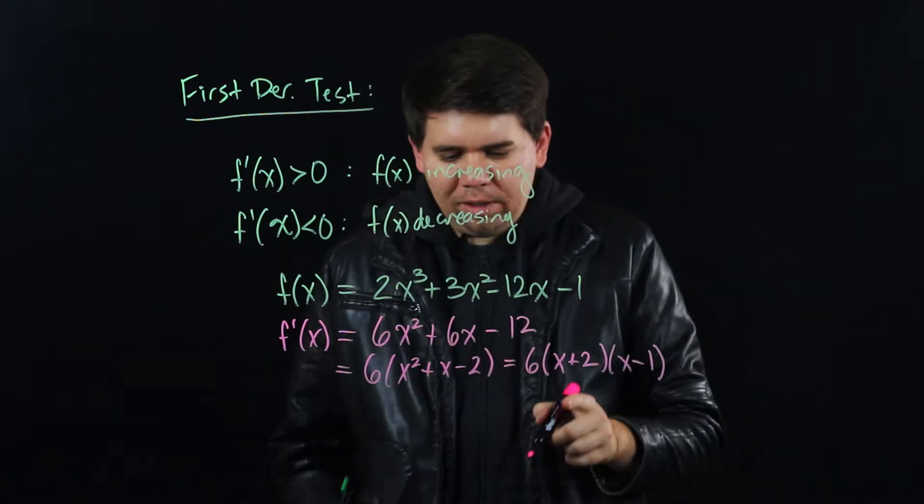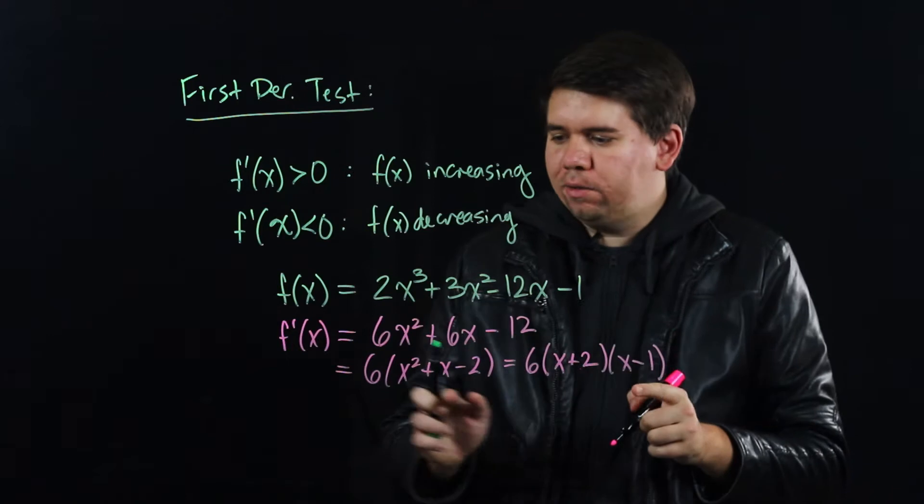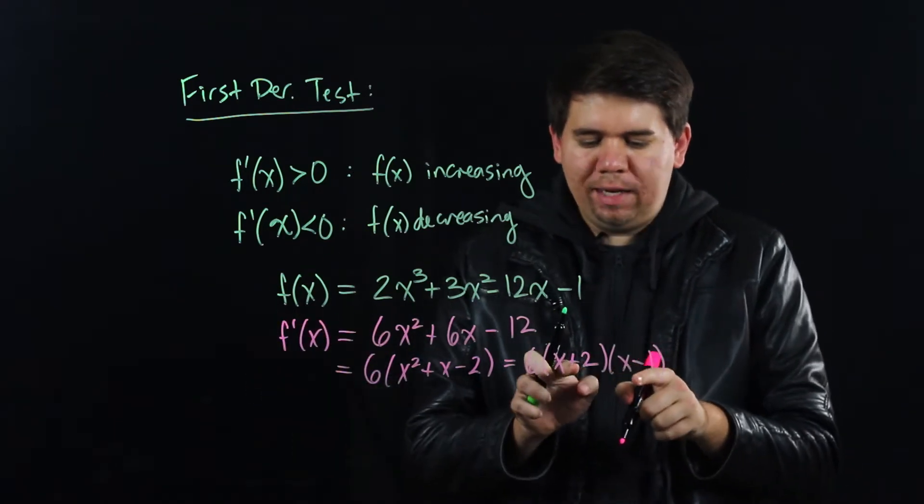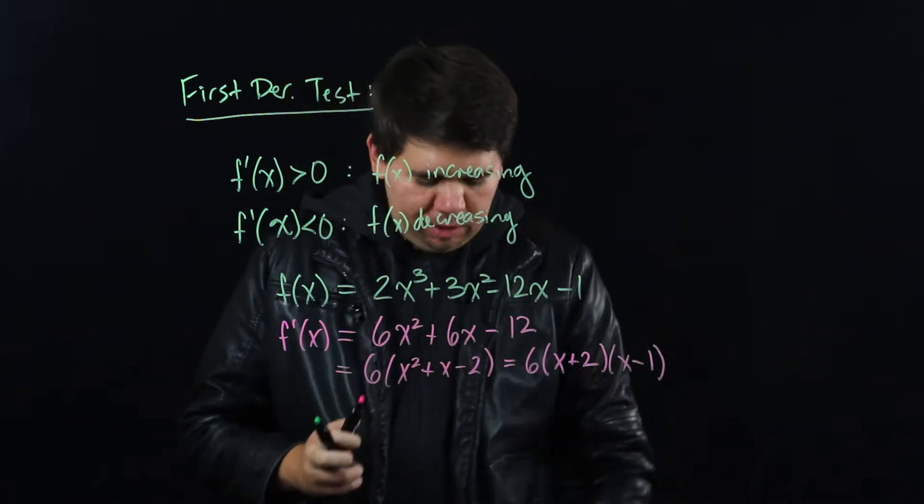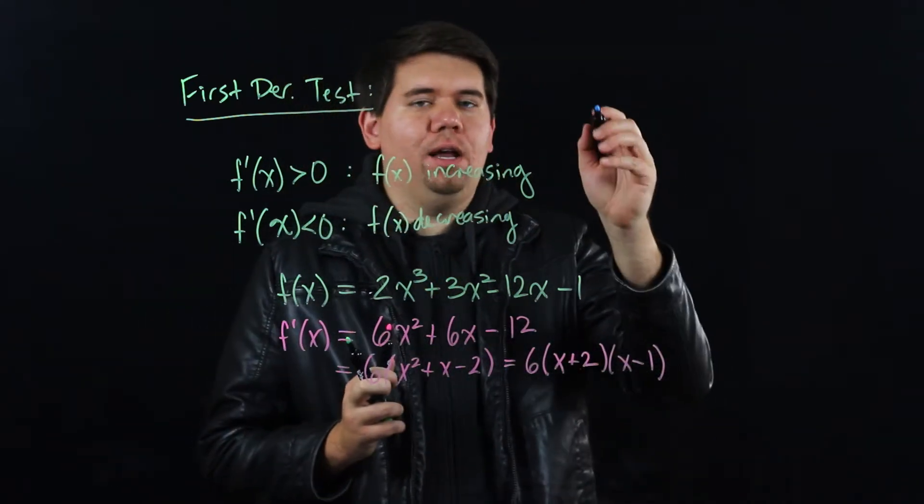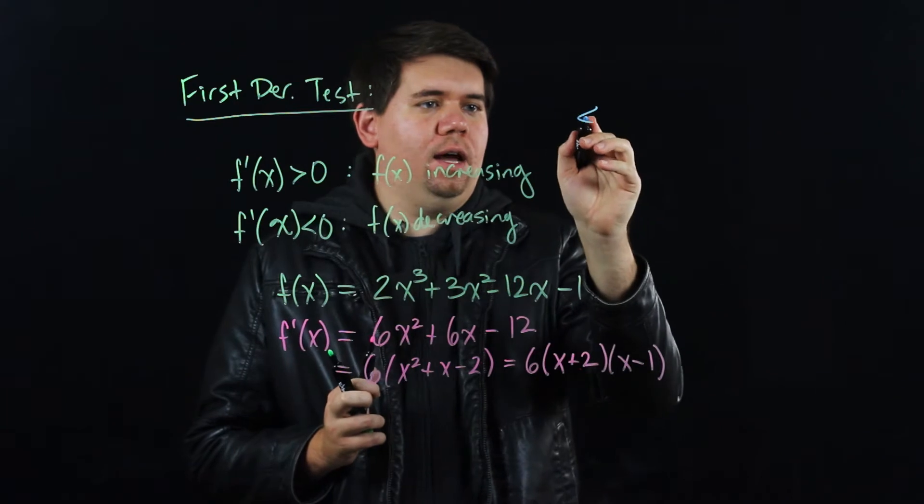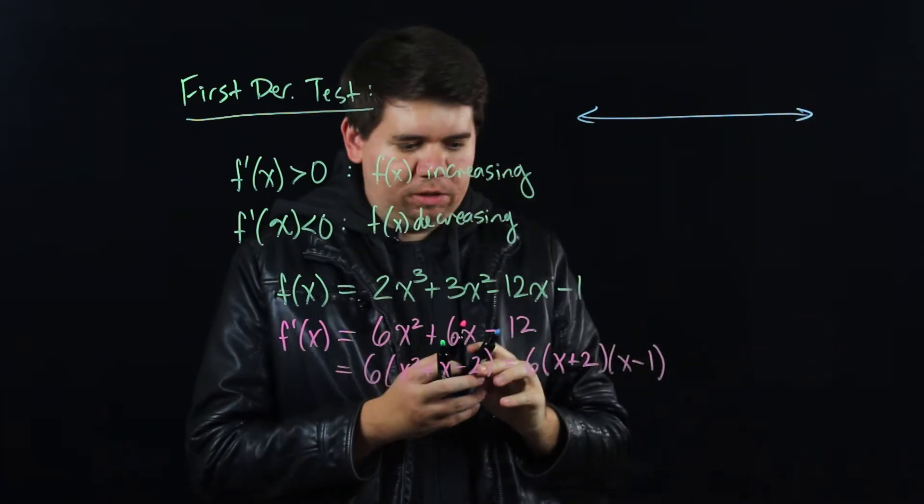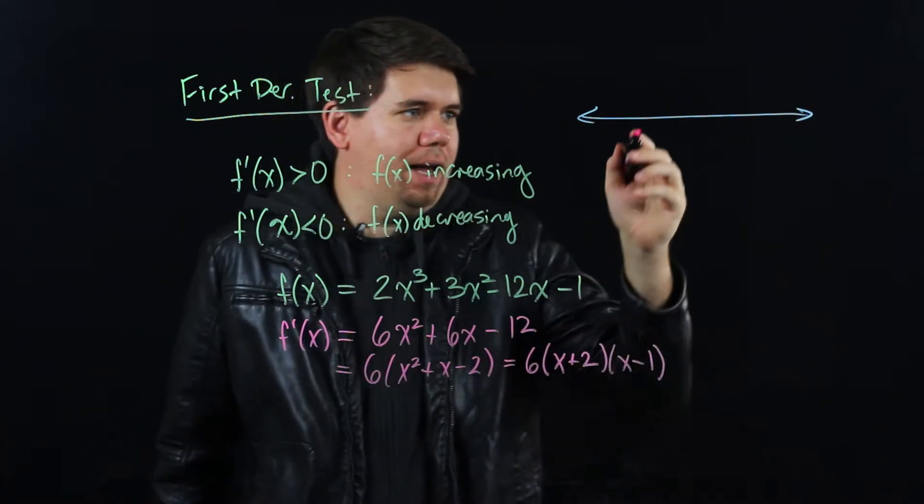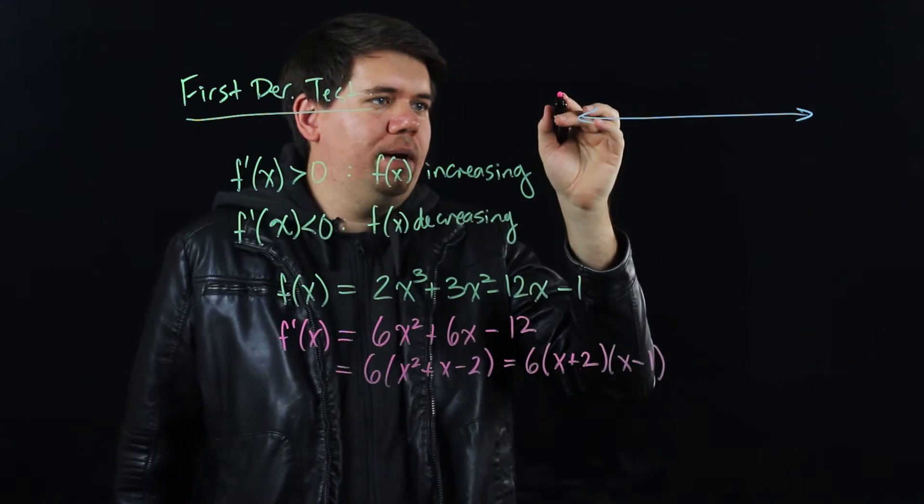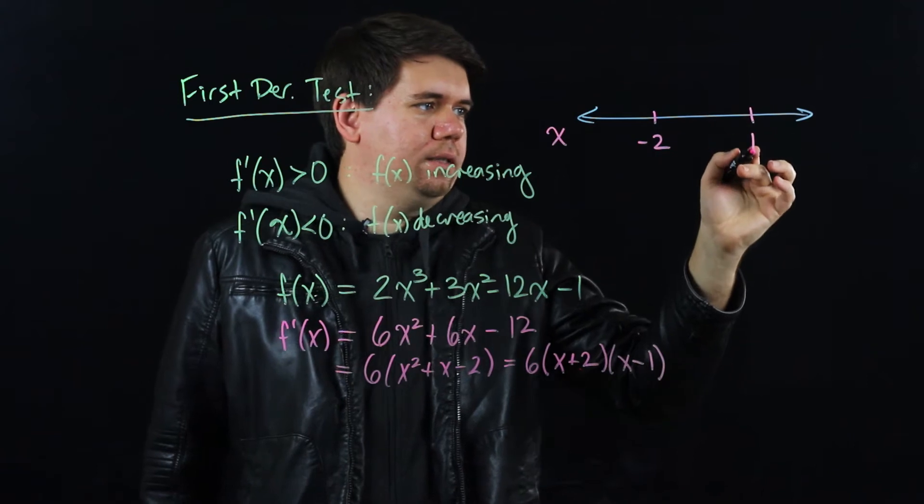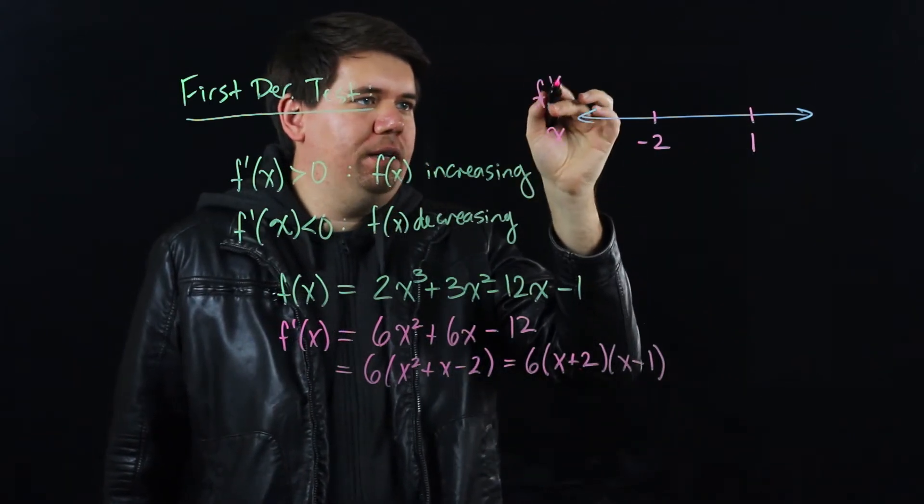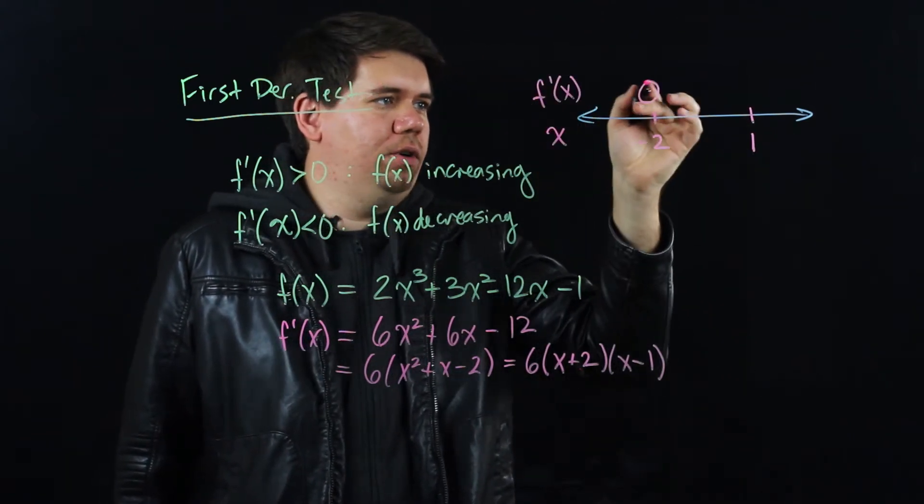And so we see the two special values here, two values that make the derivative 0. The values will be at negative 2 or positive 1. So let me go ahead and imagine a number line, and on this number line I'm going to specify those critical values. When my x is either -2 or 1, my derivative at x is 0 there.